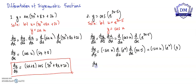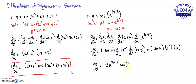So our final answer: dy/dx is equal to negative 3 times e raised to 3x minus 5, multiplied by sine of e raised to 3x minus 5. This is our dy/dx.